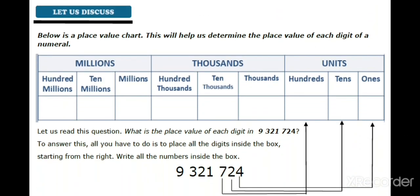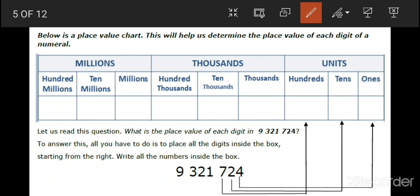Let us discuss. Below is a place value chart. This will help us determine the place value of each digit of a numeral. What do we call the chart below? It's a place value chart. One more time — what do we call the chart below? It's the place value chart. Very good. Now let me discuss with you about this chart.